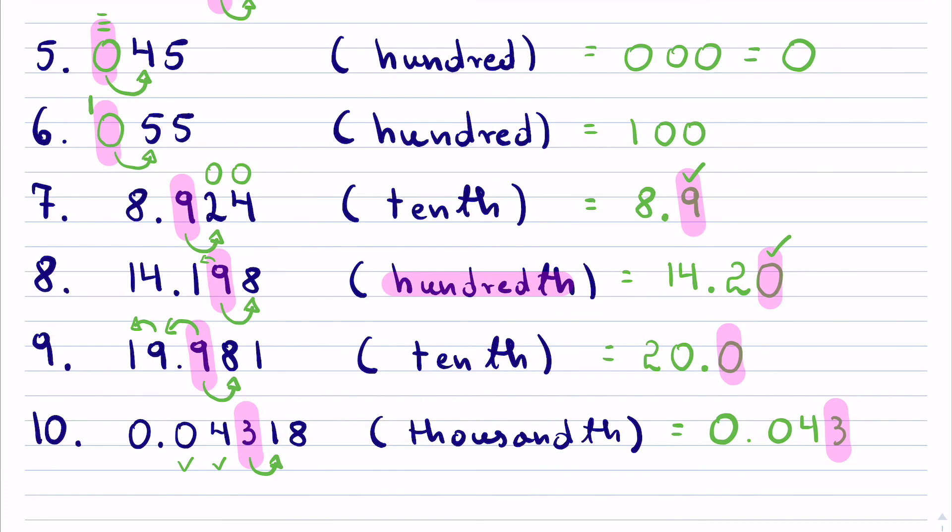You have seen 10 different examples of place values, and hopefully you found this useful with rounding. Thank you for watching.